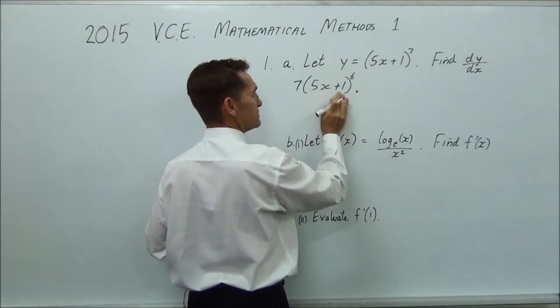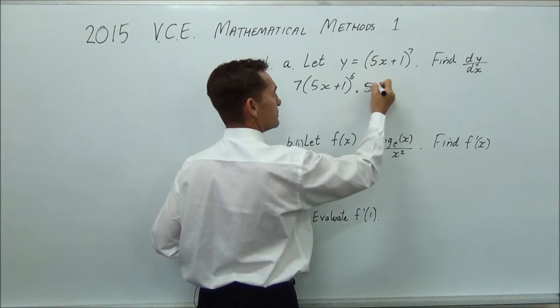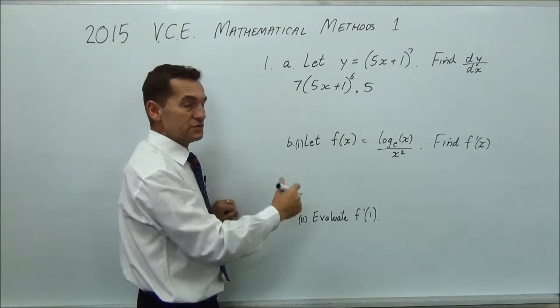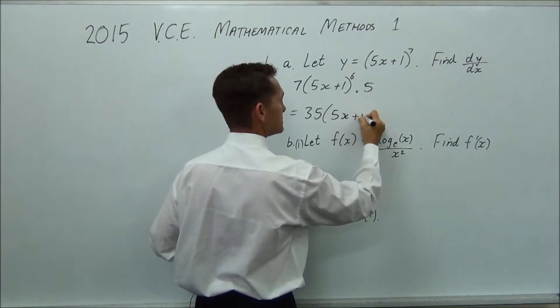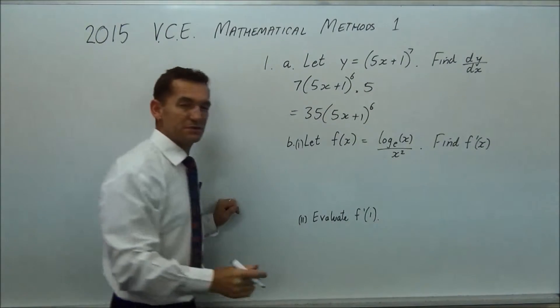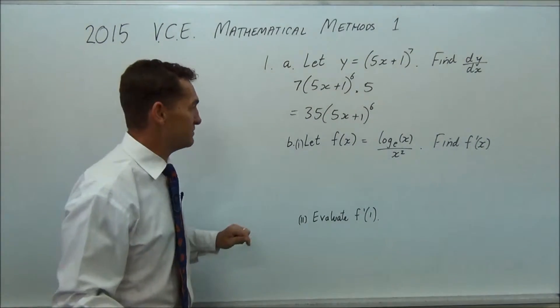So you differentiate the outside, multiply by differentiate the inside and that's just 5. So 5 times 7 is 35 and that's your answer. So it's just 35, 5x plus 1 to the 6. Pretty straightforward and you should knock that over, no problem.